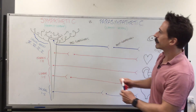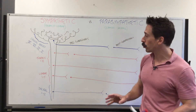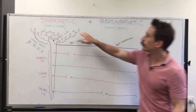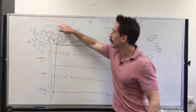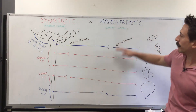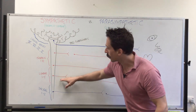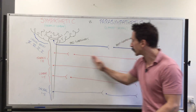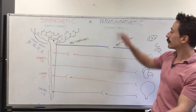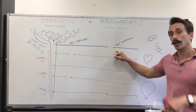For the sympathetic nervous system, the pre-ganglionic neuron is short compared to the post-ganglionic neuron. I've drawn the sympathetic nervous system in red and the parasympathetic in blue. For the sympathetic, the pre-ganglionic neuron is short compared to the post-ganglionic neuron, and it's the opposite for the parasympathetic — the pre-ganglionic is long and the post-ganglionic is short.